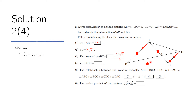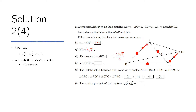We know a lot about triangle ABC from the previous questions. The angle ACD we're looking for equals angle ACB because AC is a transversal of parallel lines AB and DC — alternate interior angles are equal. Let's call this angle theta, so angle ACD = theta = angle ACB.